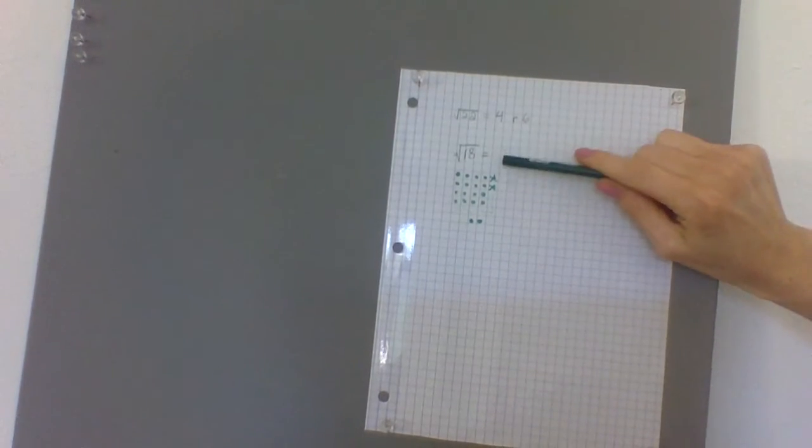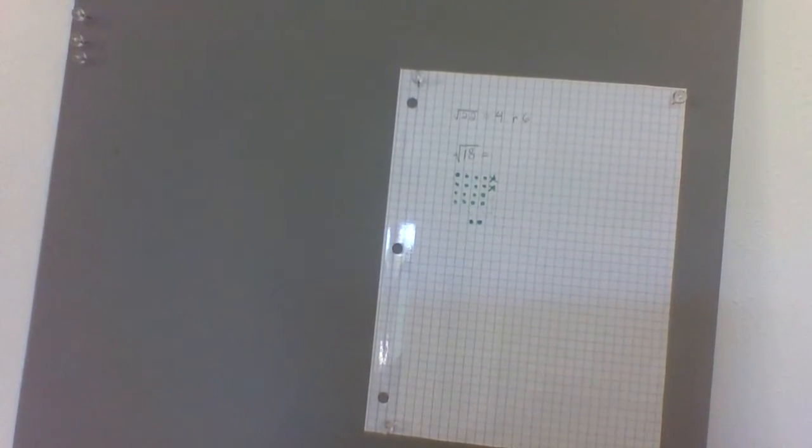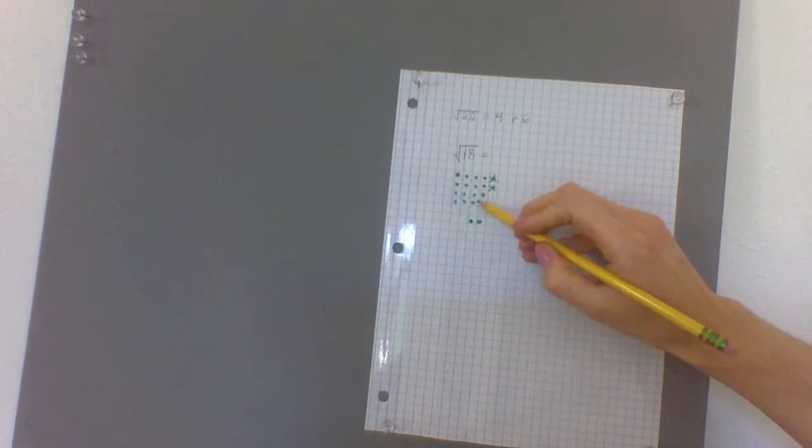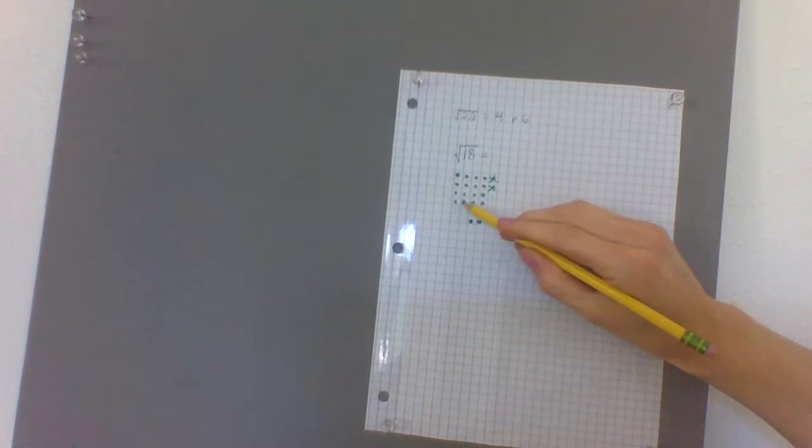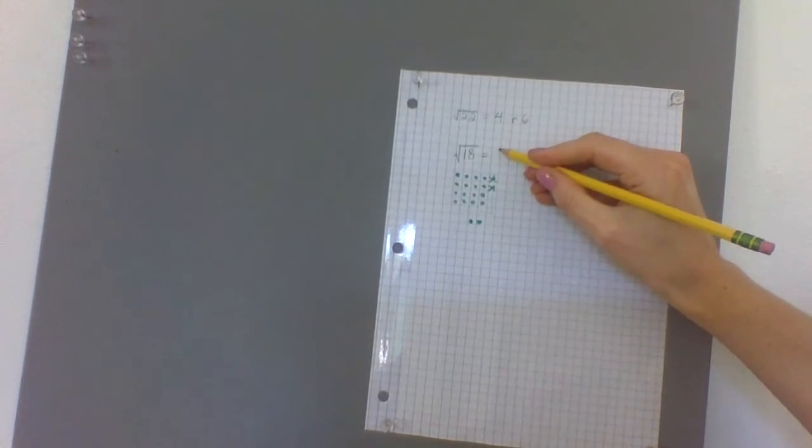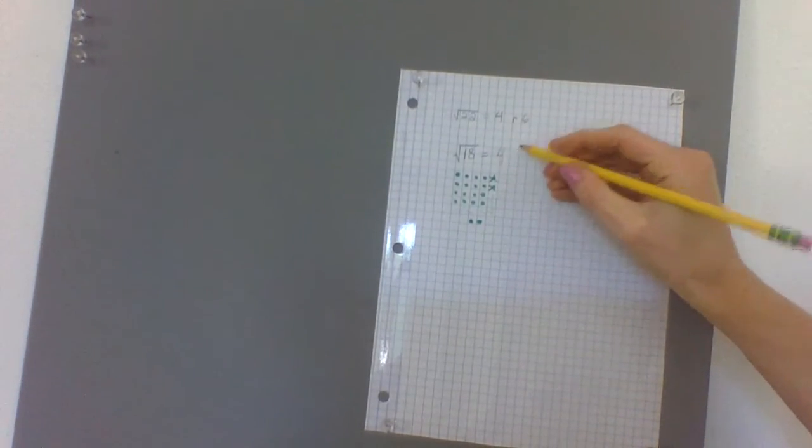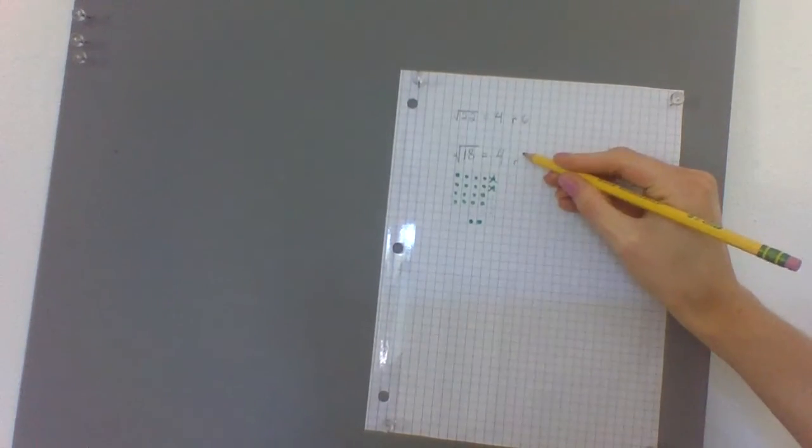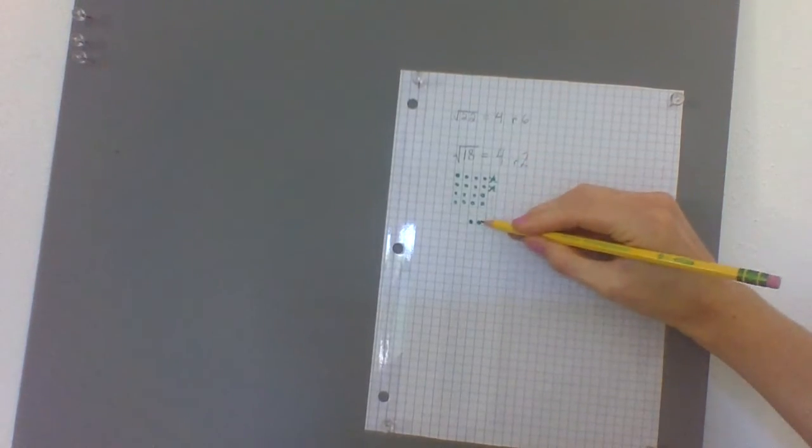So, how will we write our answer? What is the square root of 18? Well, we can count what the square is here: one, two, three, four. And then write what our remainder is: remainder two, one, two.